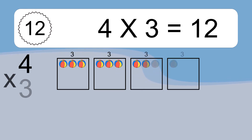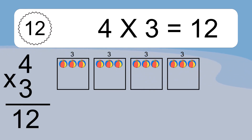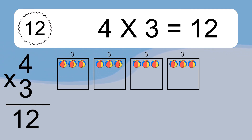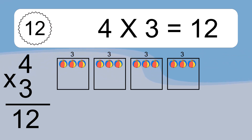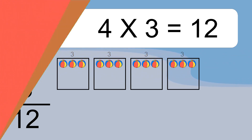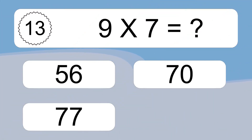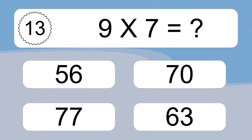4 times 3 equals what? 4 times 3 equals 12. We have 4 boxes, and each box has 3 colorful balls inside. If you count all the balls in all the boxes together, you will have 4 times 3 balls. This equals 12 balls.